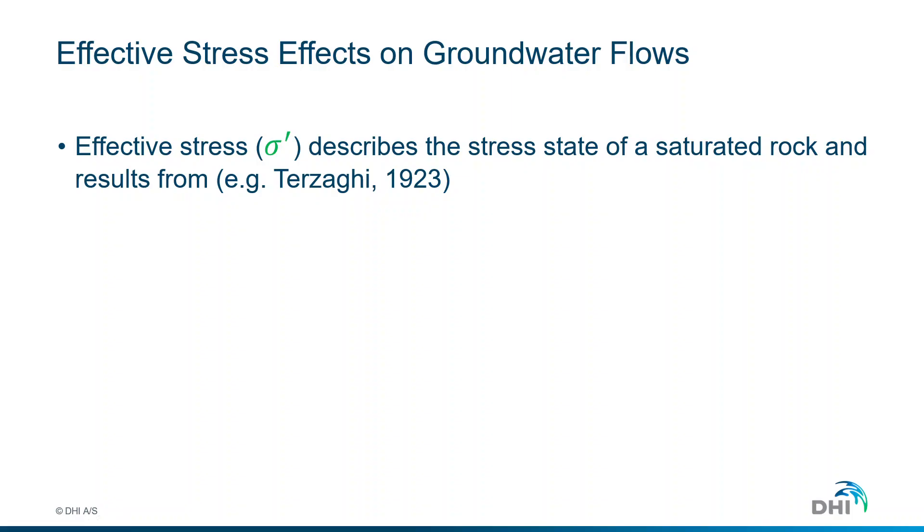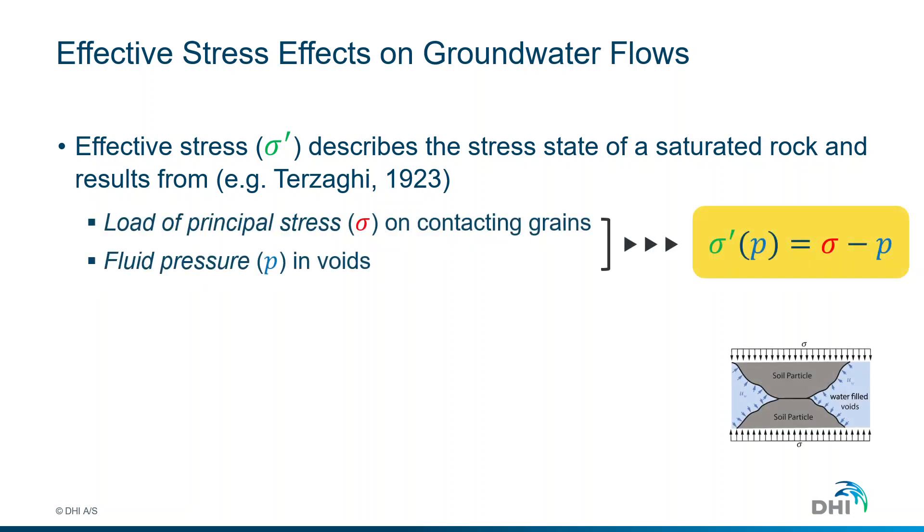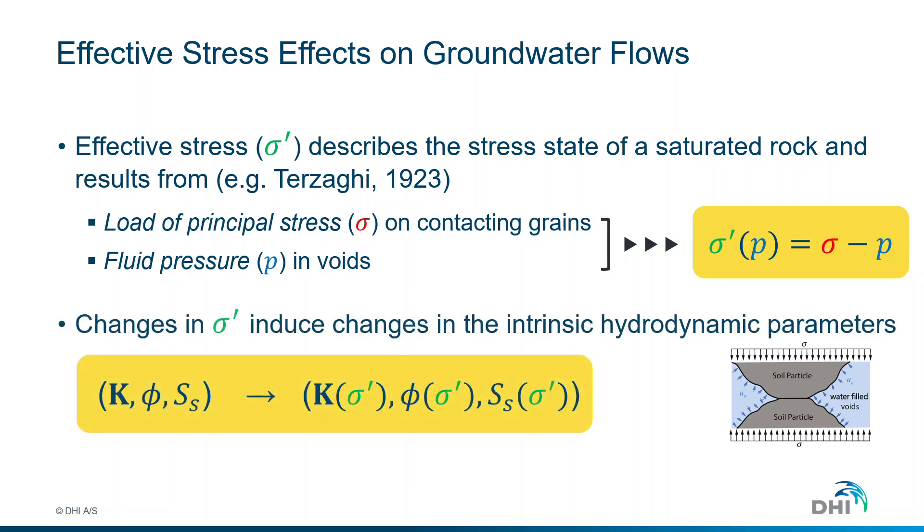We basically look at the effect of stresses on groundwater flows. We can describe these effects by the simple definition of Terzaghi in 1923, which says that effective stresses are a direct function of total stresses sigma minus pore pressure, this pore pressure being calculated over time in FEFLOW. Any change of stresses or effective stresses will produce changes in hydraulic properties like conductivity, porosity, and storage coefficient.